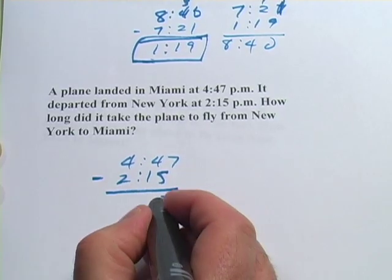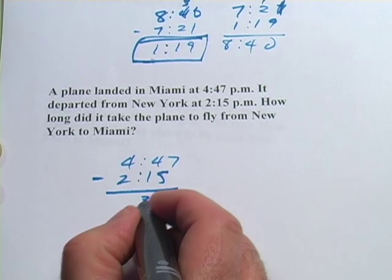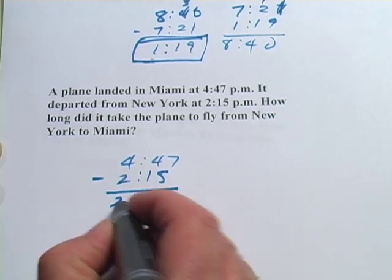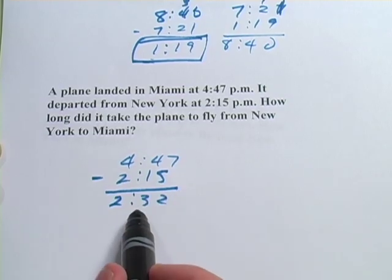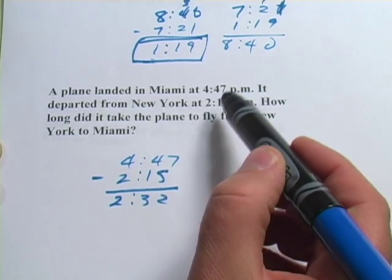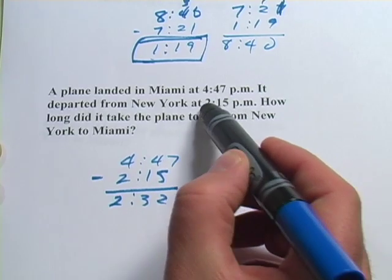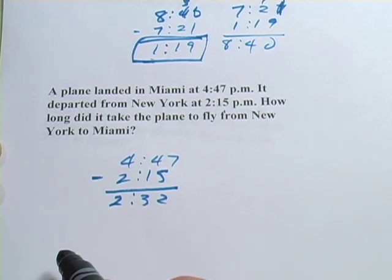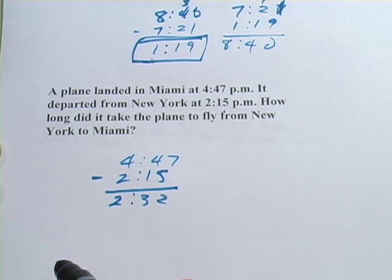47 minus 15: 7 minus 5 is 2, so that gives us 32 minutes. And 4 minus 2 is 2. So it looks like it was 2 hours and 32 minutes to get from New York at 2:15 to Miami at 4:47. That's a little bit of work with elapsed time.